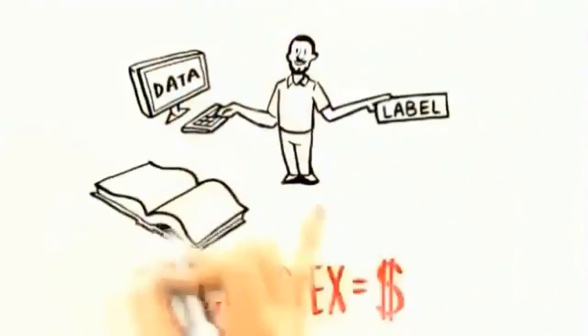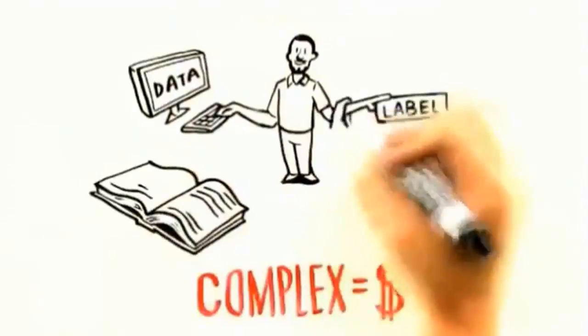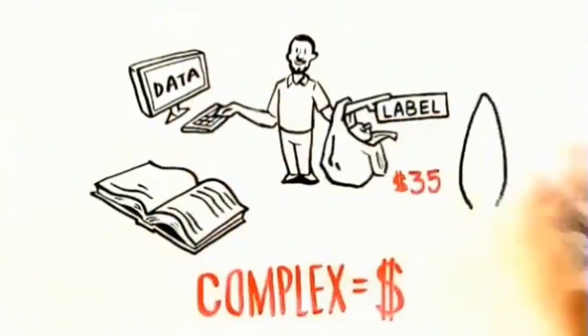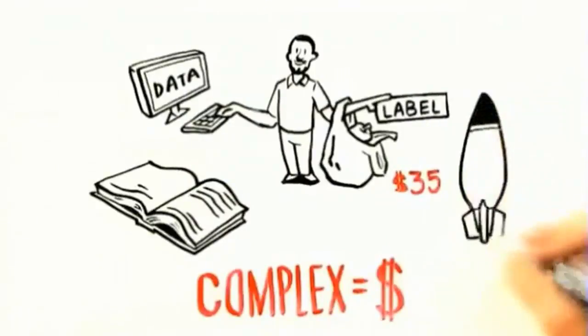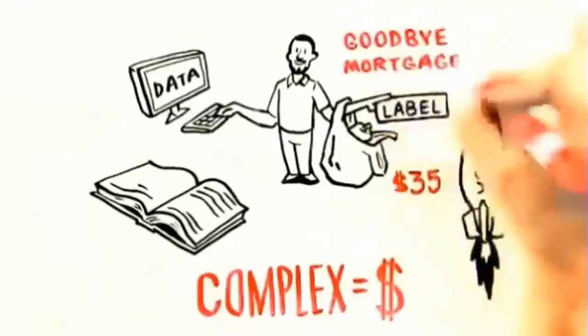You could make good money doing everything from data entry to labeling photos. Proofreading pays a little more. Picking up groceries for a neighbor pays an average of $35. Solving engineering problems for NASA, if you happen to actually be a rocket scientist, that will go a long way toward paying off your mortgage.